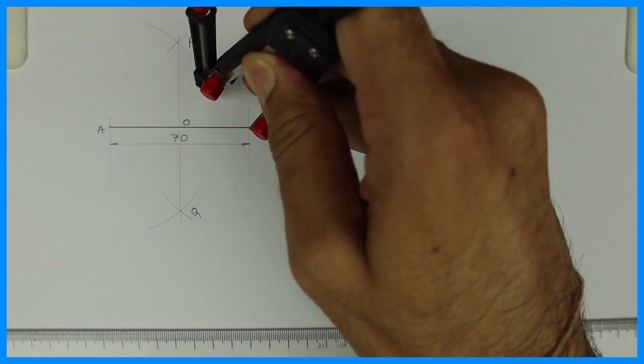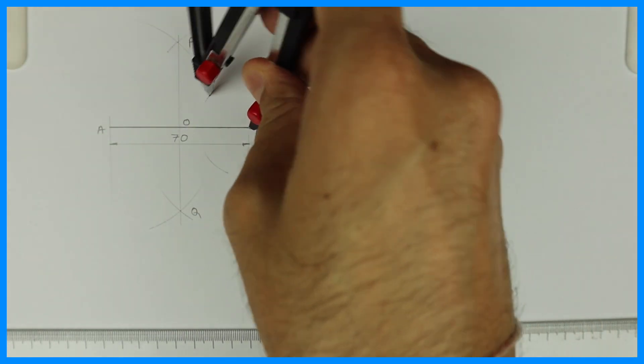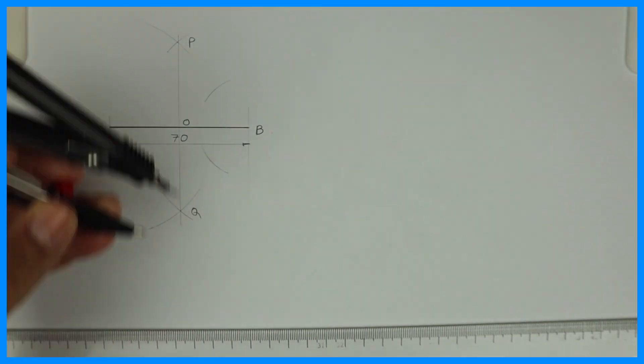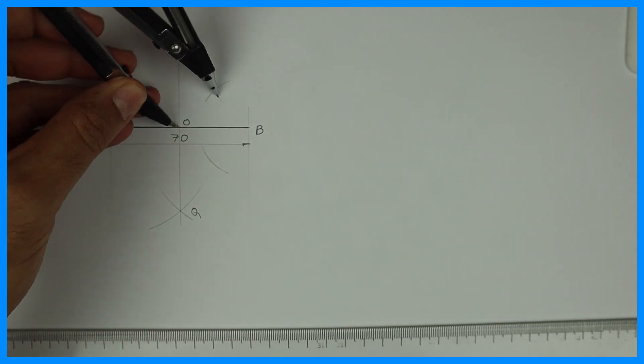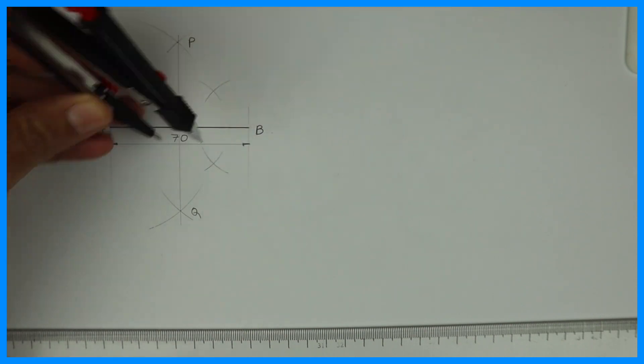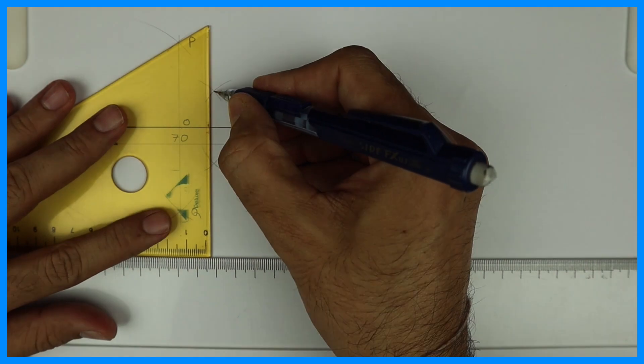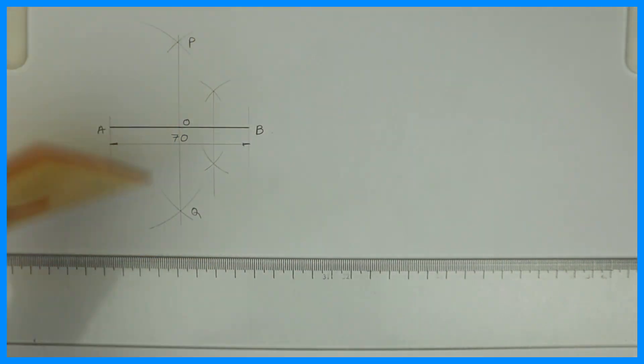Now we'll divide line into four parts. So you take from B, you take more than half, cut up and down. Again from O you take more than half of BO and cut up and down. And you draw vertical line. So you divide line OB into two parts.